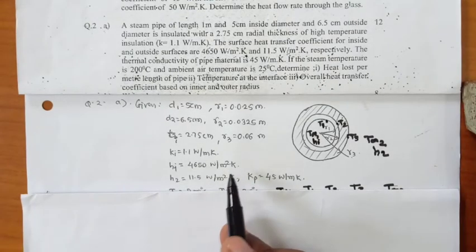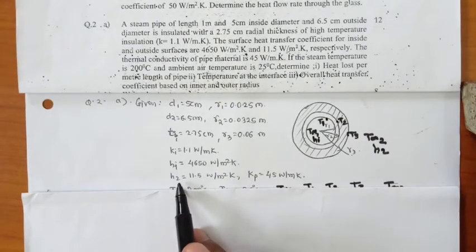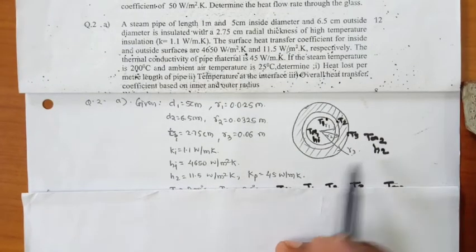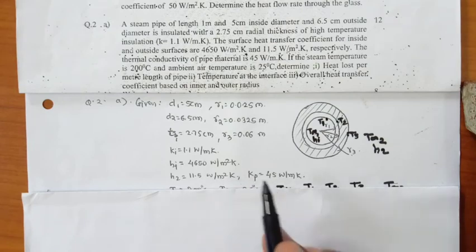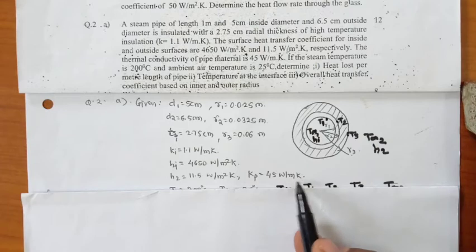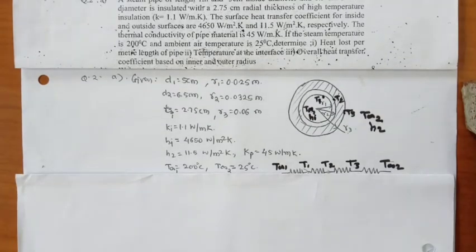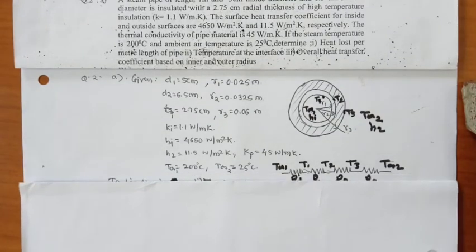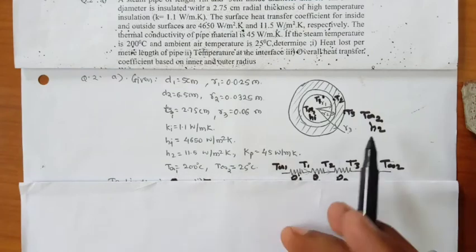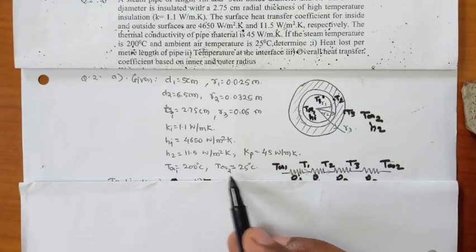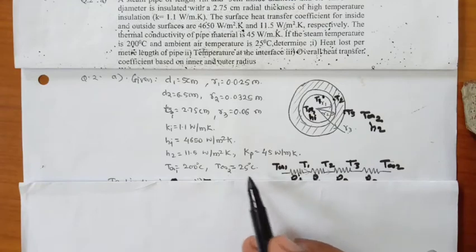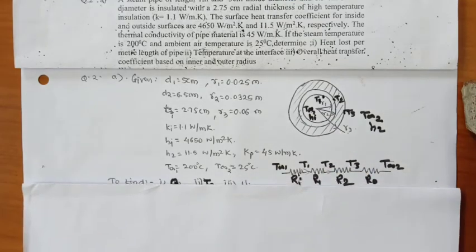4650 watt per meter square Kelvin. H2, outside heat transfer coefficient, is 11.5 watt per meter square Kelvin. Kp, thermal conductivity of pipe material, is 45 watt per meter Kelvin. Steam temperature T∞1 is 200°C and ambient air temperature T∞2 is 25°C.